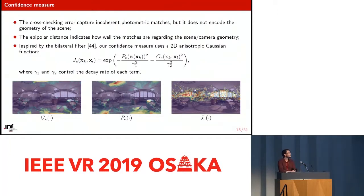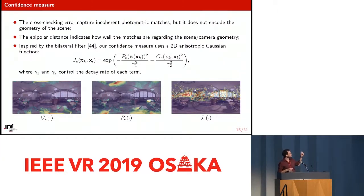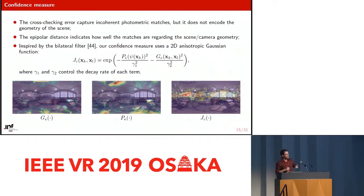We also compute a geometric distance based on the epipolar distance, and we combine both the photometric and geometric errors into a joint confidence measure shown here. The first image is the geometric error, the second is the photometric error, and the third is the joint confidence measure. Colder colors represent smaller values and hotter colors represent higher values. For the confidence measure, hotter is better, and the opposite applies for the errors.